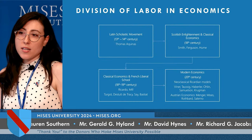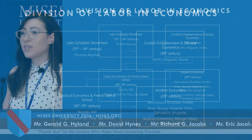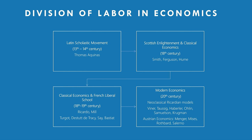The division of labor as a concept started to appear even in Plato, Aristotle, and some early Chinese philosophers, but it was with the Latin scholastic movement in the 13th and 14th century that it started to be discussed as a concept as such — though those discussions were more philosophical and not so much economic in tone. It was with the Scottish Enlightenment and classical economics in the 18th century, starting with Adam Smith, then David Hume, Ricardo, and Mill, that division of labor really started to be treated as an economic question.